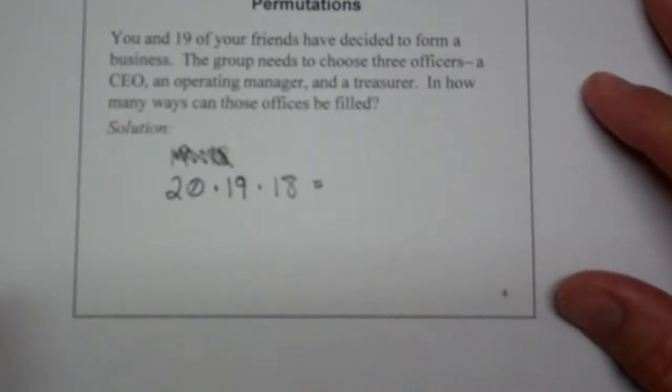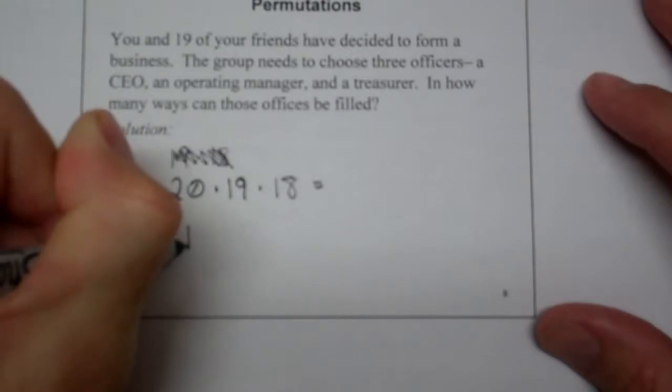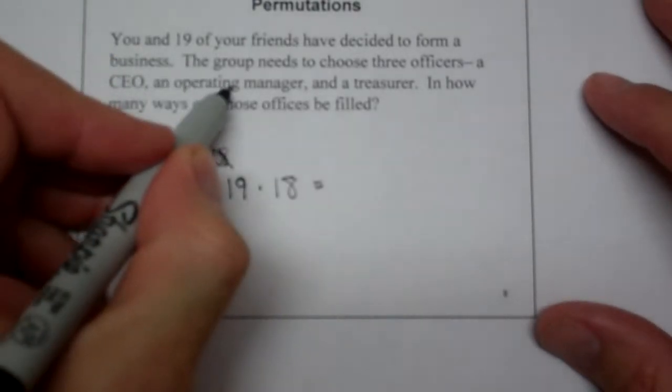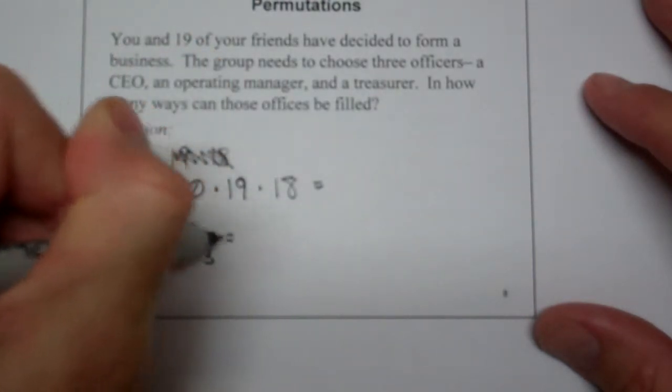Now, what we could have done is we could have said, oh look, this is 20. This is a permutation because the rank matters. The CEO, the operating manager, and the treasurer all have different options. I'm going to pick 3 from it.